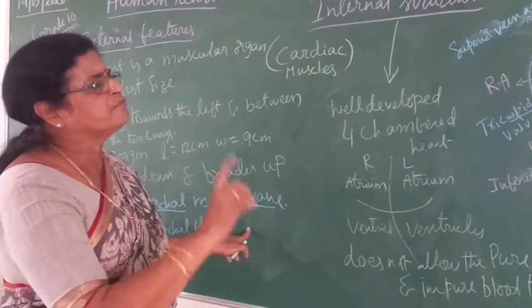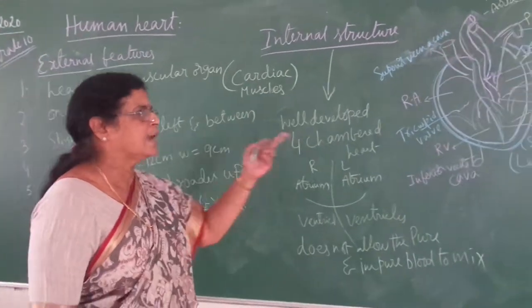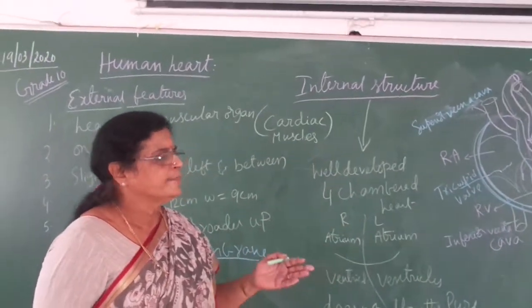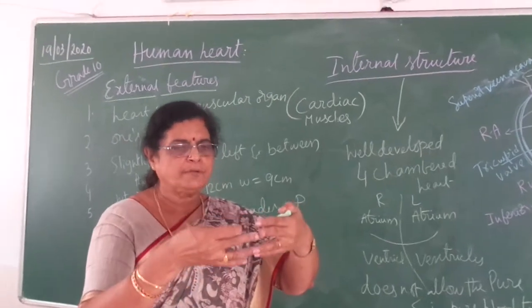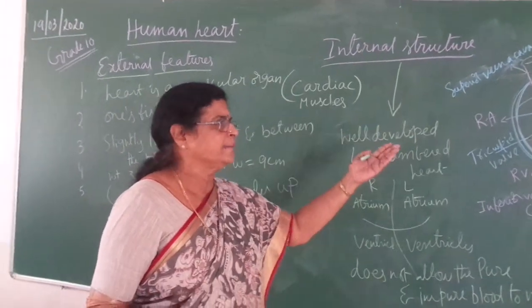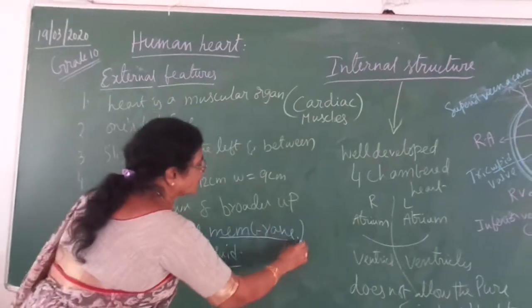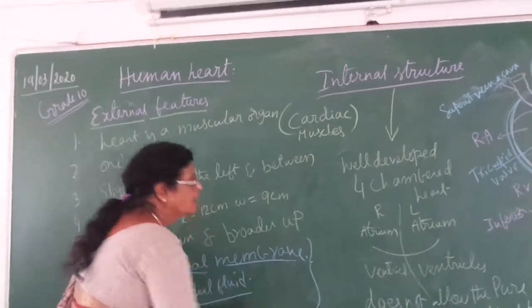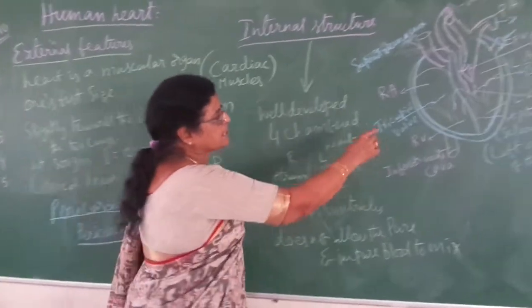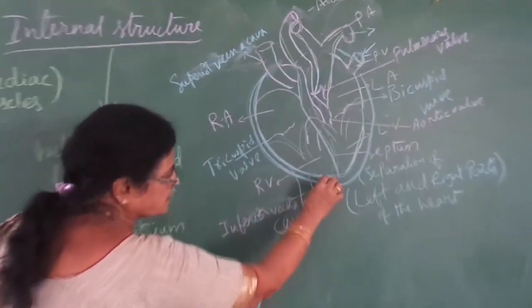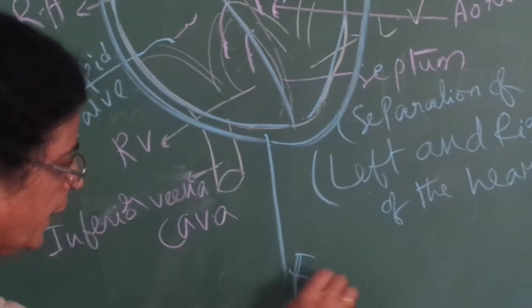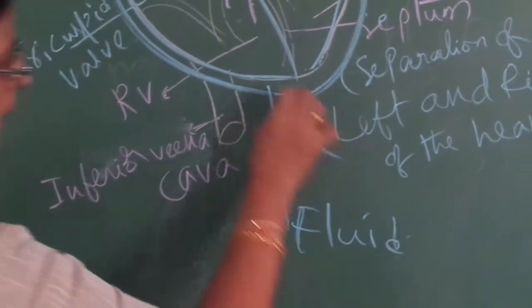Vital organs in our body — the lungs, heart, brain, and kidneys — are safely located between bones. For example, the brain is in the cranium. This is the protection of the heart from external blows and injuries. The pericardium is the double membrane, and the pericardial space between the two membranes is filled with pericardial fluid.